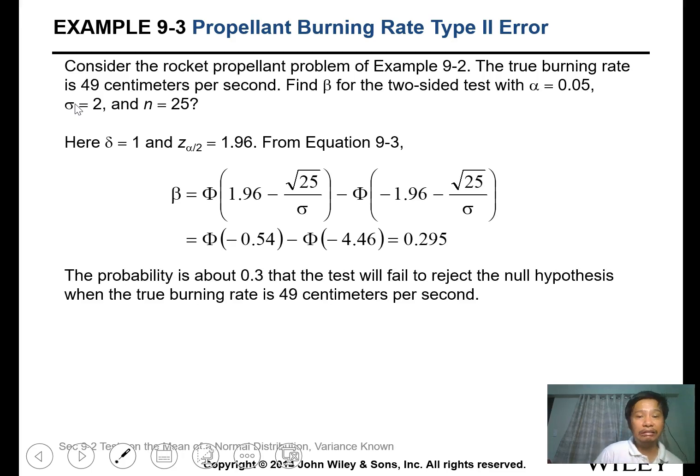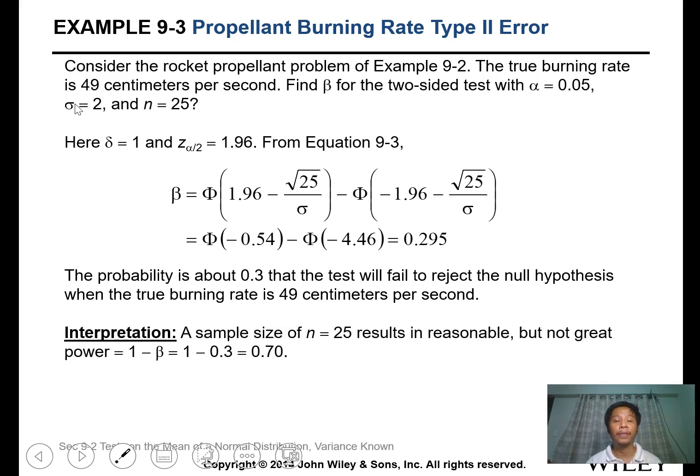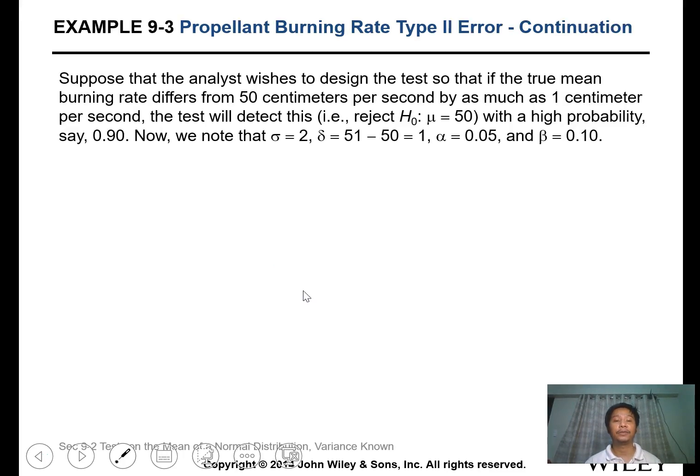The probability is about 0.3 or 30% that the test will fail to reject the null hypothesis when the true burning rate is 49 cm per second. Calculating the power, this is 1 minus beta, so the power of our statistical test is 0.70 for n equals 20.